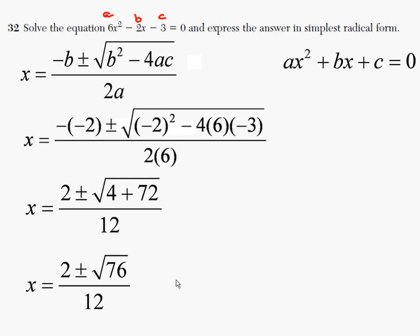Okay, now we have to simplify this radical 76. And we do that with radical 4 and radical 19. And we get 2 radical 19. So this is going to be 2 plus or minus 2 radical 19 over 12.